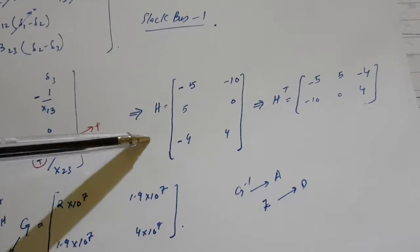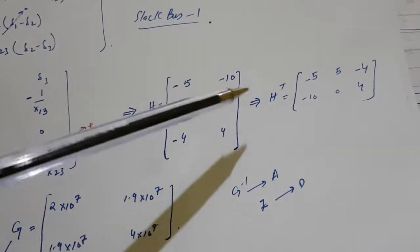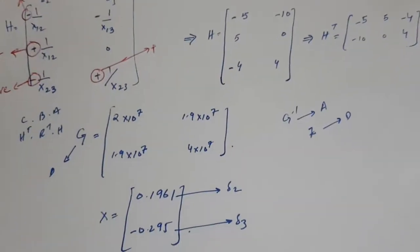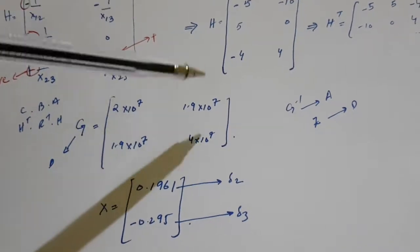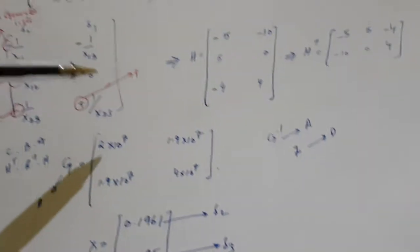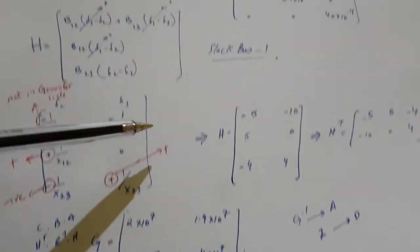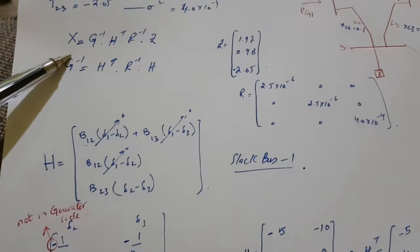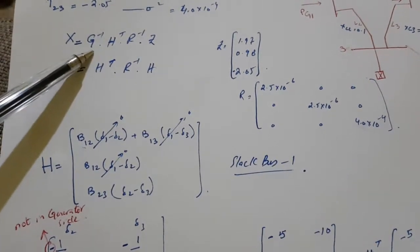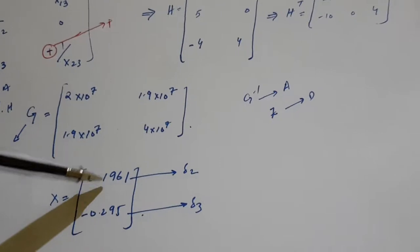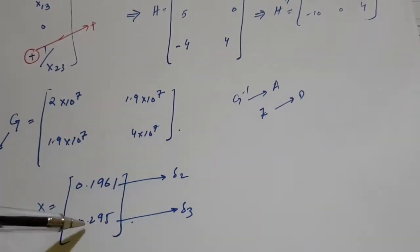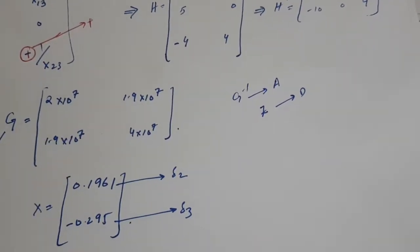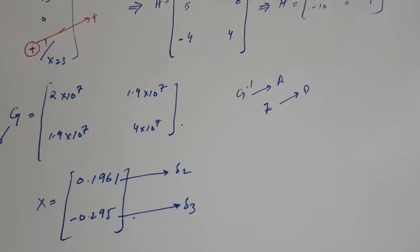After putting in all the values, I get the H matrix and H-transpose. I will get G by multiplying all these values using the calculator. After putting the values into the state estimation formula, I get the state variables: del2 is this value and del3 is this value. Del1 is already 0.